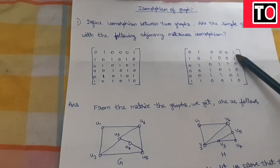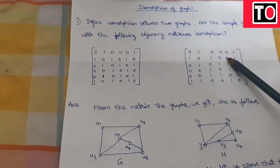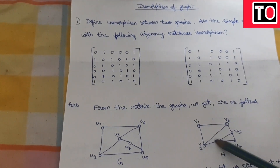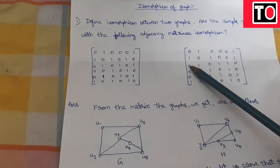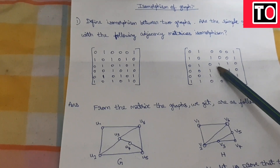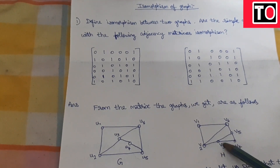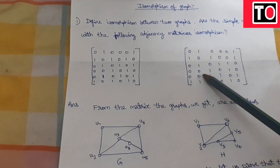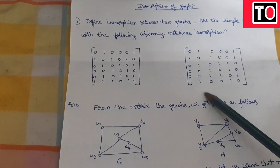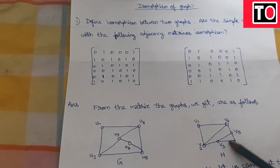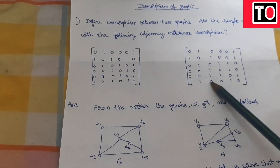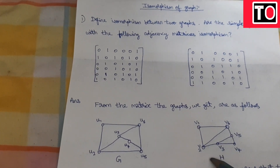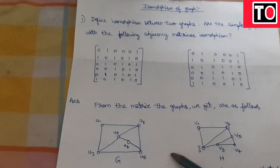Now for graph H, the adjacency is as follows: V1 is adjacent to V3, V4, V5, V6. V2 is adjacent to V6. V3 is adjacent to V2, V4, V5. V4 is adjacent to V3 and V5. V5 is adjacent to V3, V4, and V6. V6 is adjacent to V1, V2, and V5.